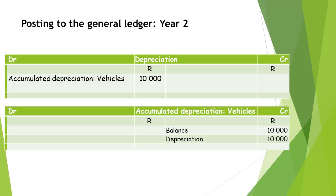During the second year, the accumulated depreciation account will have an opening balance of 10,000 Rand. When posting the transaction for the second year to the general ledger, the depreciation account will be debited with 10,000 Rand and the accumulated depreciation for vehicles account will be credited with 10,000 Rand. The closing balance of the accumulated depreciation after the second year will amount to 20,000 Rand.